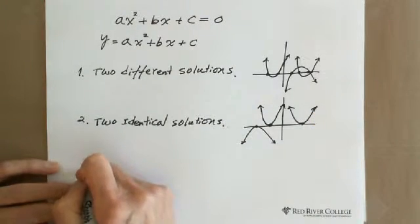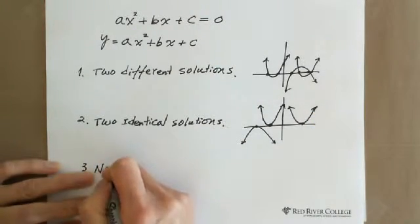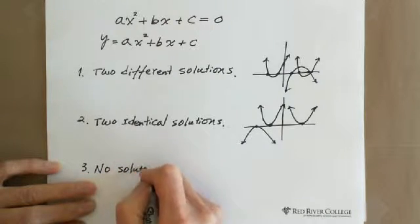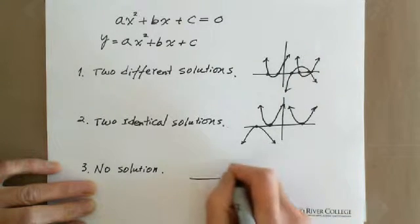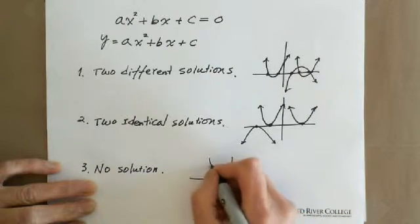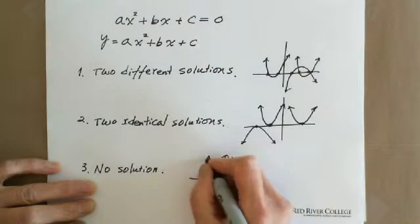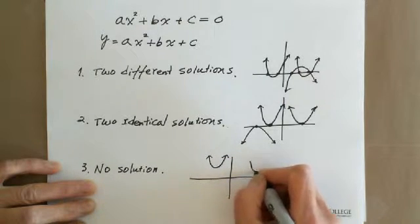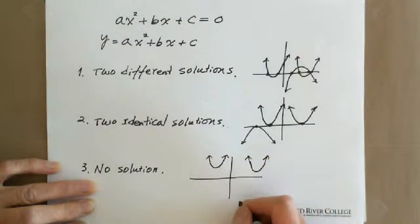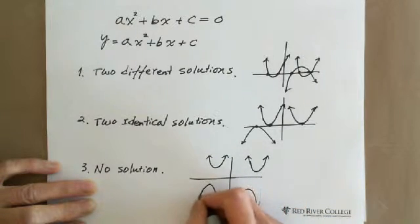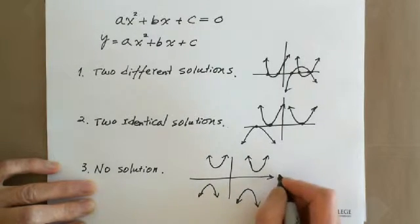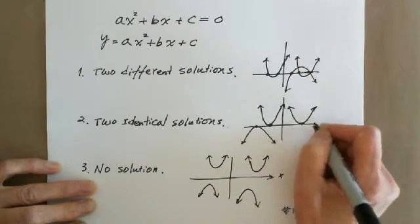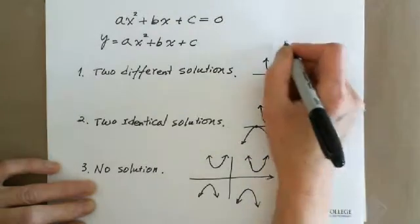The third case is no solution. That means the parabola is not touching the x-axis at all — whether open upward or open downward, it doesn't matter — there is no point touching the x-axis. We call that situation no solution.